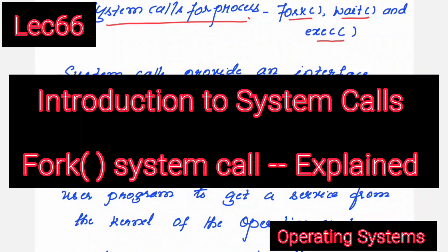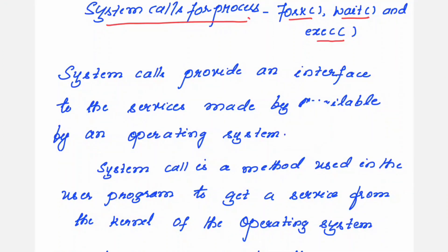Hello viewers, welcome to this video lecture series on operating systems. In this session, I shall explain the different system calls for process. For process control, we have fork, wait, and exec system calls. Let me first give the introduction, then I will show you the demo programs on how to implement these fork, wait, and exec system calls.